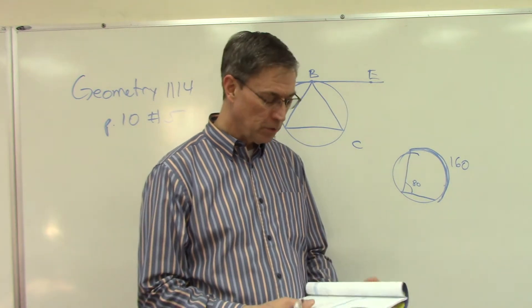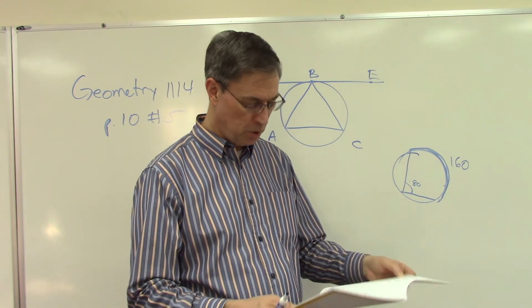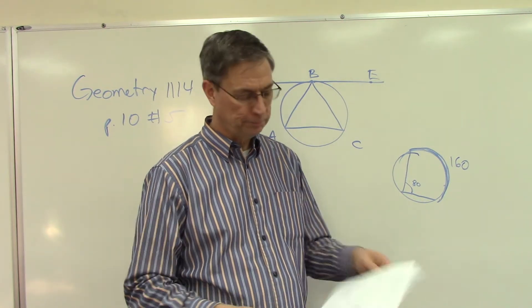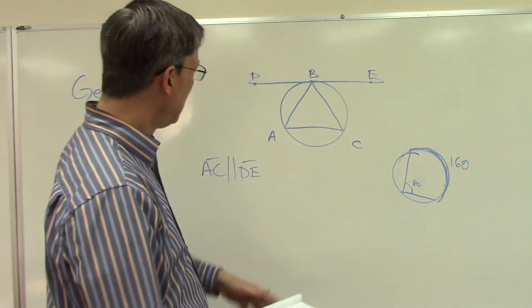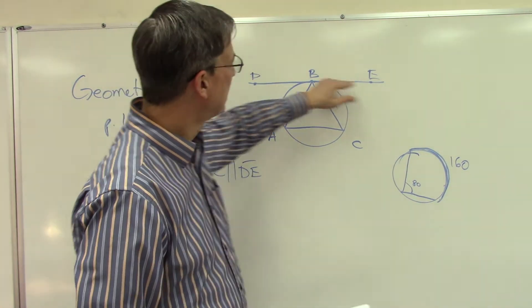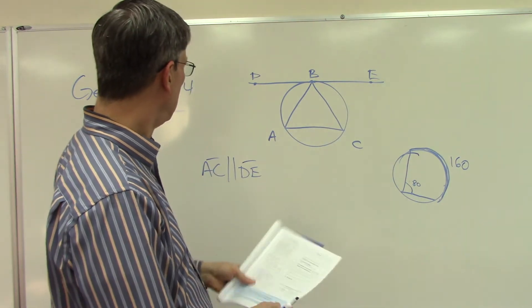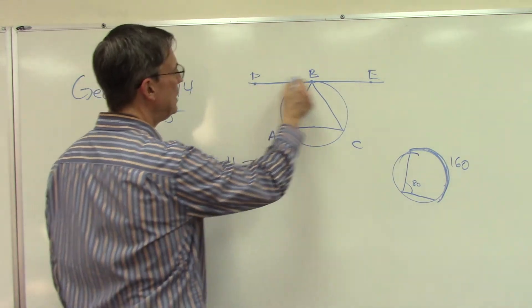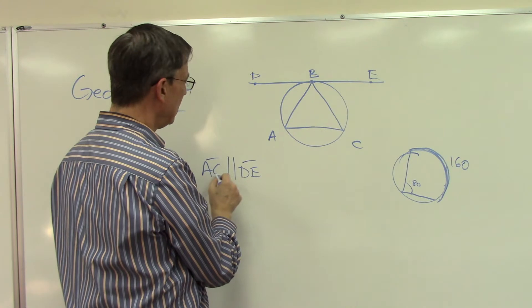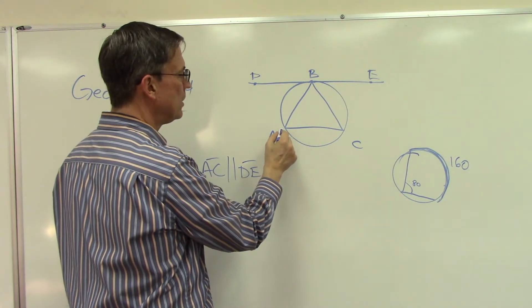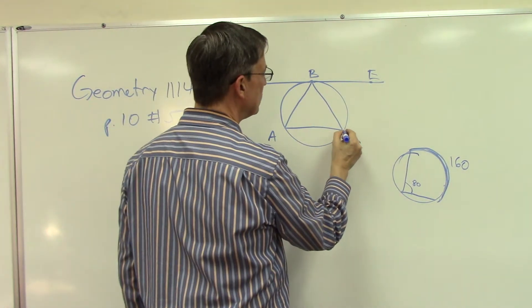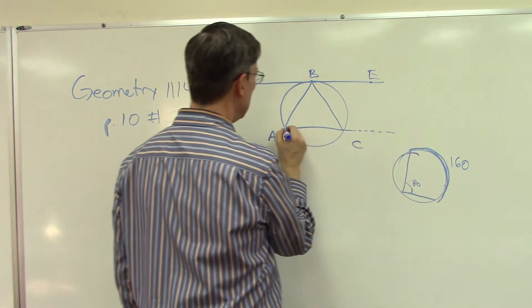All right. So now let's look at the problem here on page 10, number 5. And I drew this here. This tells us that this line is parallel. So this is line DE, is parallel to AC. Now right now it doesn't look like a line. I'm just going to extend it so that we can see that we have a line. Okay? Sometimes that helps.